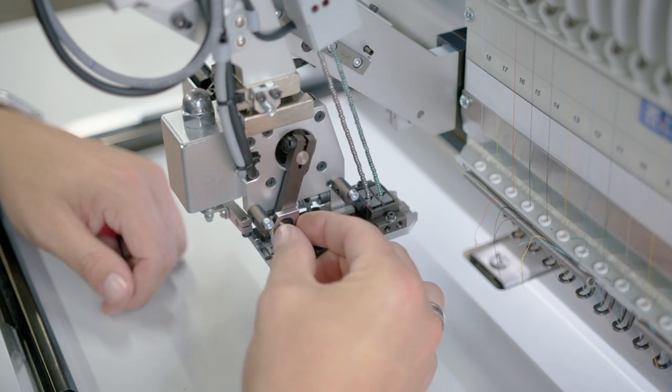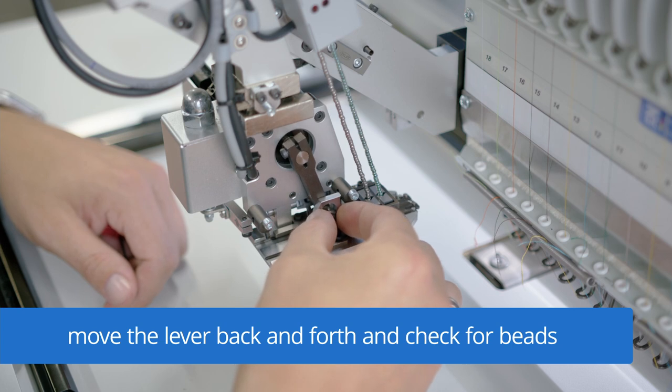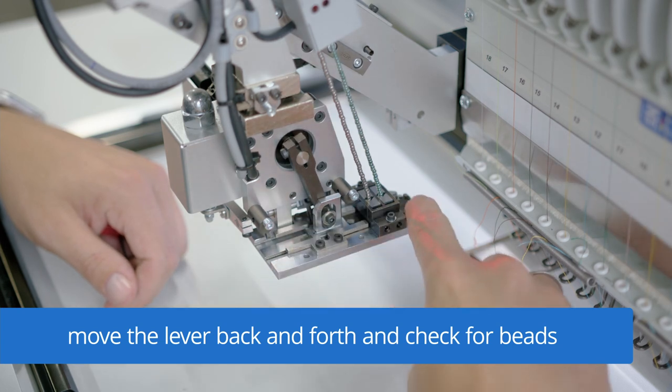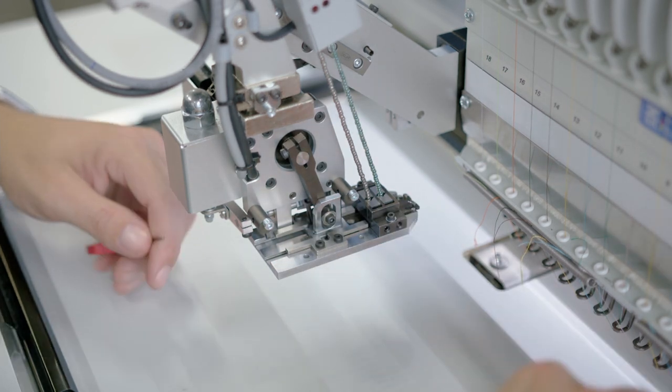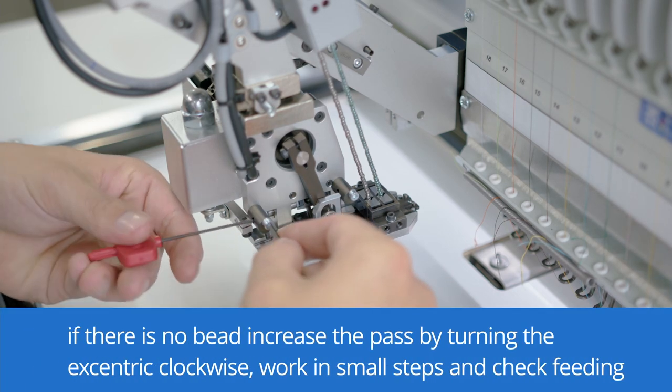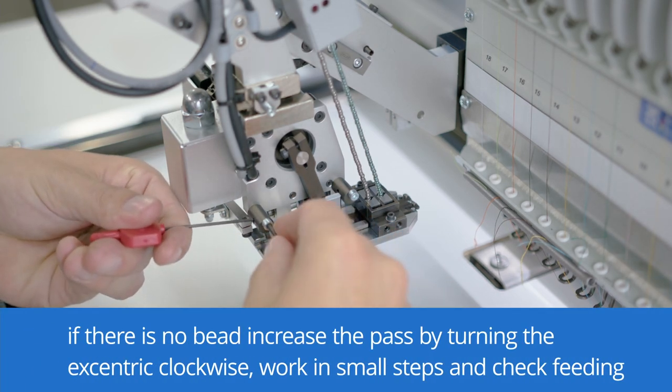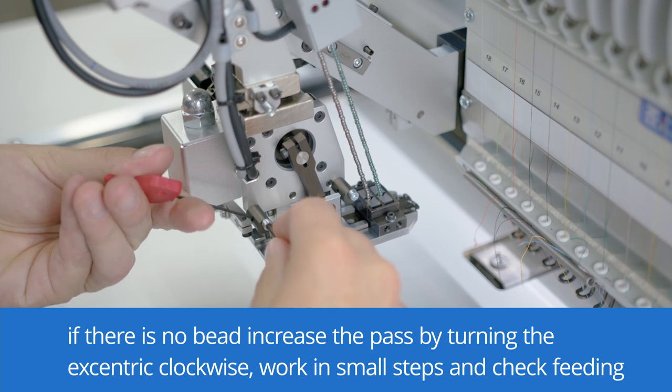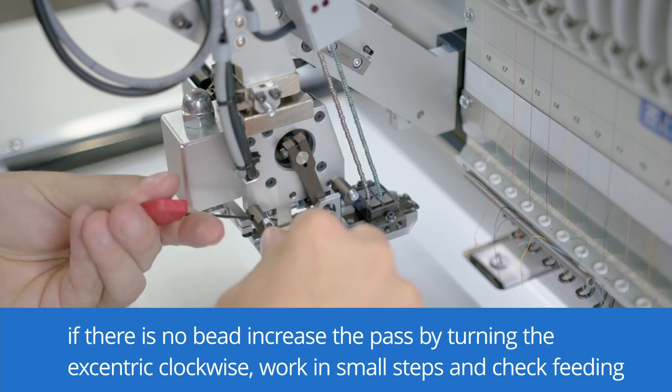We start with the inner beads. We move the lever backwards against the hard stop and push it back forward. If there is no bead, we need to increase the pass by turning the eccentric clockwise. Always work in small steps and check the feeding after each adjustment.